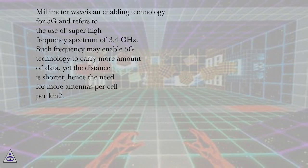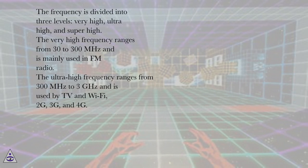Millimeter wave is an enabling technology for 5G and refers to the use of super high frequency spectrum of 3 to 30 gigahertz. Such frequency may enable 5G technology to carry more amount of data, yet the distance is shorter, hence the need for more antennas per cell per square kilometer.